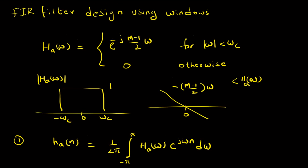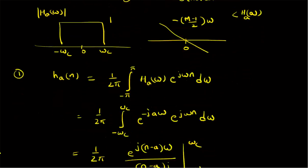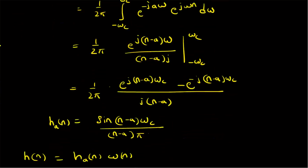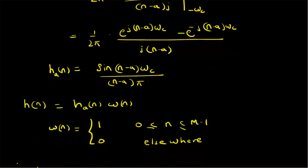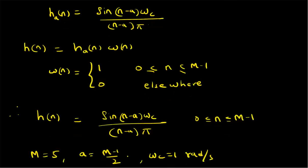To summarize, we have looked at the windows method for designing an FIR filter. Given the desired frequency response h_a(ω) = e^{−j(m−1)/2 · ω} for |ω| ≤ ω_c and 0 otherwise — this is a linear-phase FIR filter with symmetric structure around 0 — the first step is to compute the time-domain response h_a(n), the inverse Fourier transform, found to be sin((n−a)ω_c) / ((n−a)π). Then h(n) = h_a(n)·w(n), where w(n) is a rectangular window from 0 to m−1.